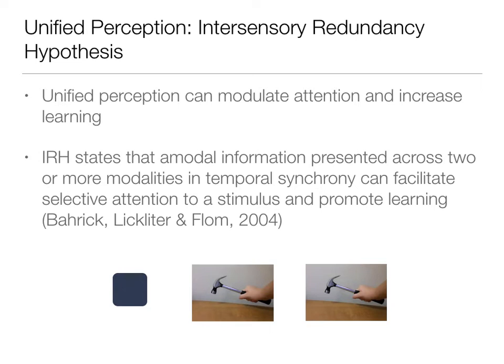What the inter-sensory redundancy hypothesis means is: when you have information from more than one sensory source and those sensory channels are working together conveying the same information — that redundancy — when we're getting the same information from each of these modalities, that's going to be beneficial. This enhancement we're getting is going to be beneficial. The inter-sensory redundancy hypothesis is primarily focused on learning, so it's primarily a developmental model.